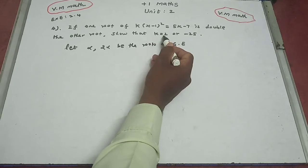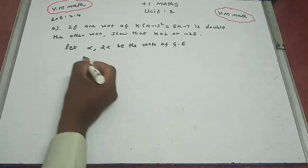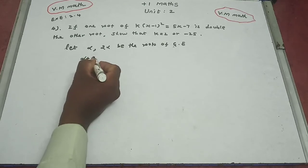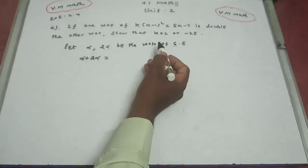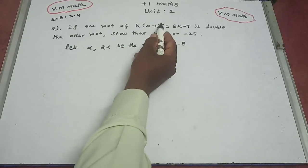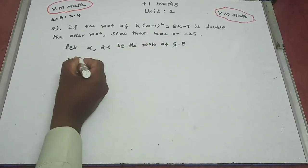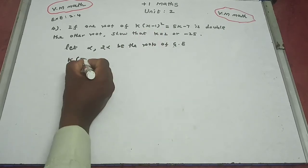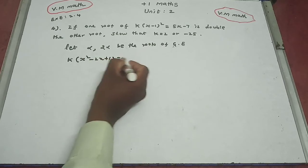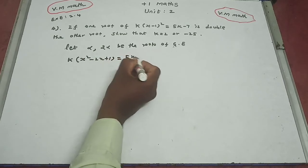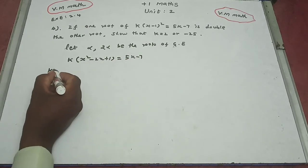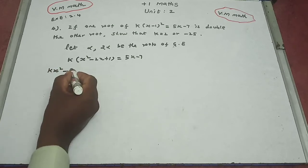We need to prove k = 2 or -25. First, expand the equation. From sum of roots, first expand — a minus b whole square. Then multiply by k, so a minus b whole square gives x squared.